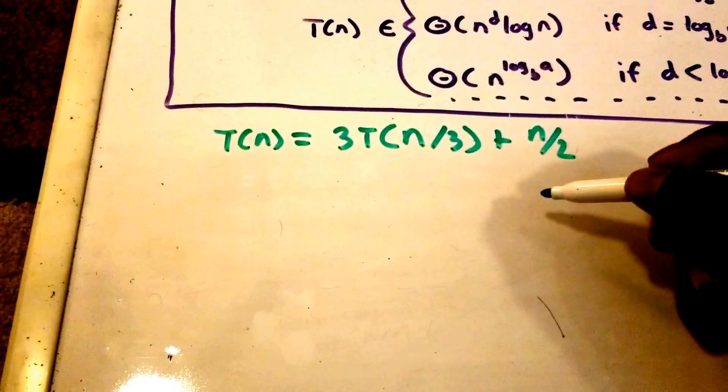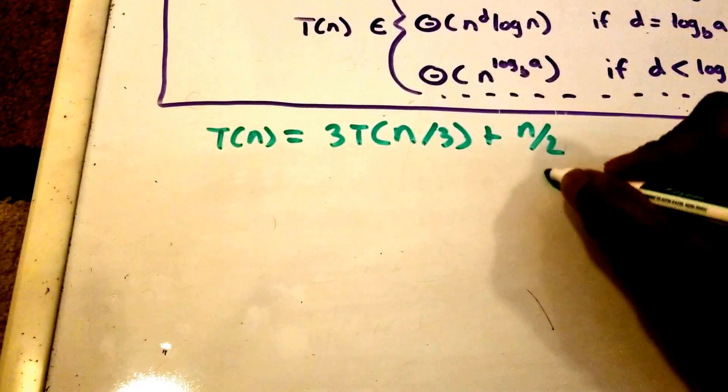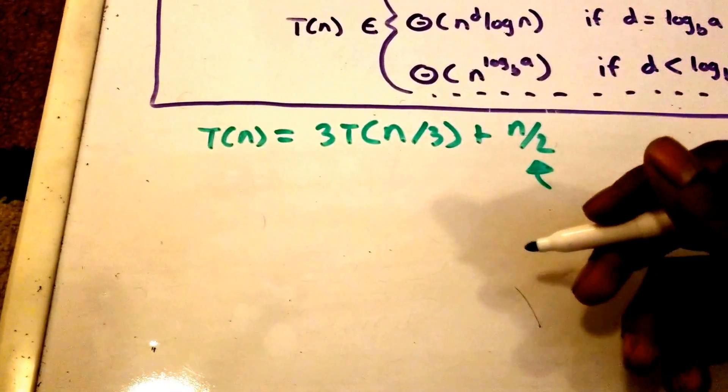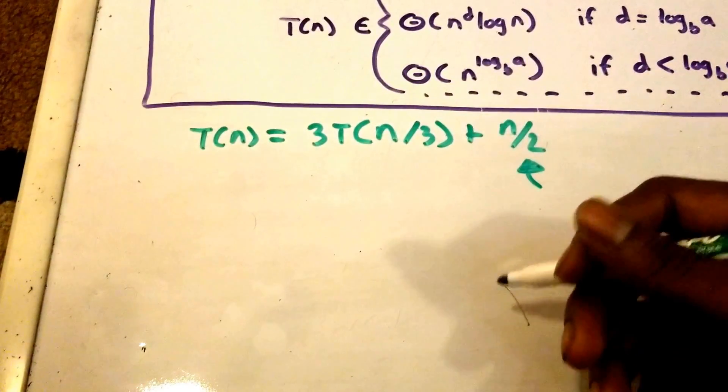So what we need to do is we need to figure out what n/2 belongs to in terms of big O, big theta, and big omega.